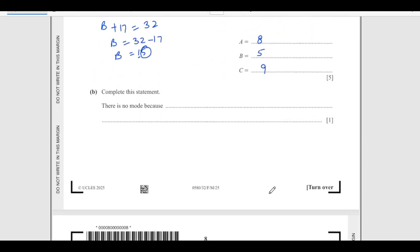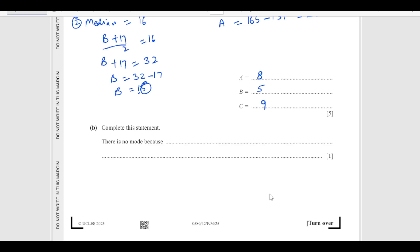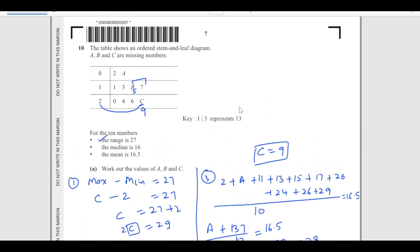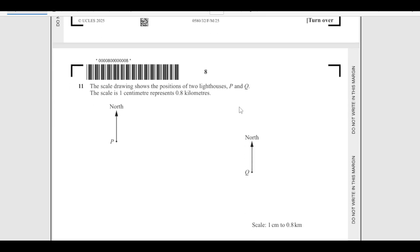Now complete this statement. There is no mode because none of the values is repeated. We can say all values are different. Let me explain it to you again. We have question number 10: the range is 27, so range is maximum value minus minimum. This is C minus 2 that is 27, so we got C as 9. Then we go one by one with the other values, then we will get the answer.